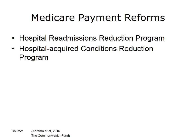Medicare payment reforms focus on adopting effective delivery and, in some instances, reducing adverse medical events such as hospital-acquired infections and repeat admissions. The Hospital Readmissions Reduction Program reduces Medicare payments to hospitals with excess readmissions for certain conditions, such as acute myocardial infarction or pneumonia. A hospital is considered to have excess readmissions if their rate exceeds the national average. In fiscal year 2015, 2,610 hospitals faced a penalty, with 39 hospitals receiving the maximum reduction of 3%.